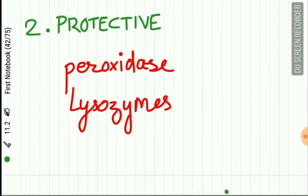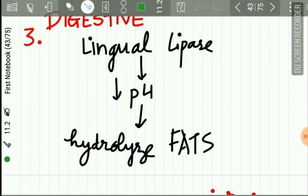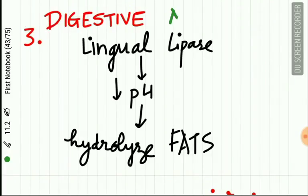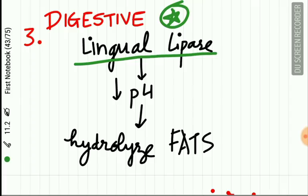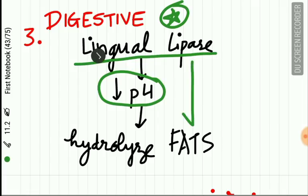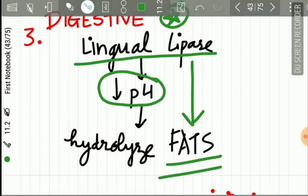The second function is protective — the saliva released by the von Ebner gland contains peroxidase and lysozymes, which are strong antibacterial enzymes. The third and very important function is digestive: the secretion contains lingual lipase, which has a reduced pH and hydrolyzes fats into mono- and diglycerides, aiding in fat digestion.